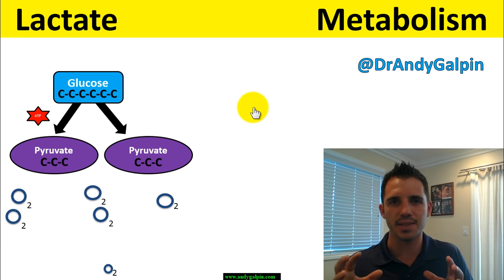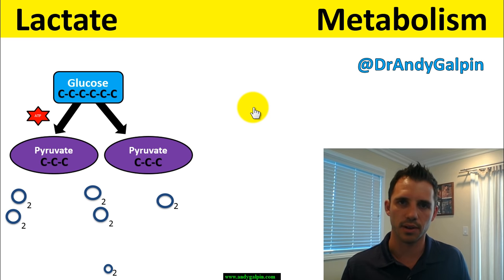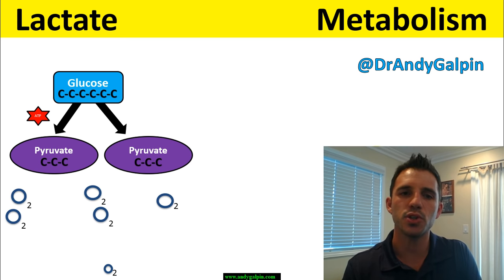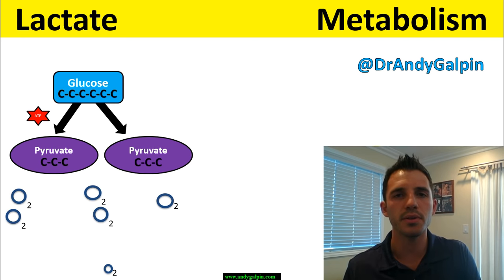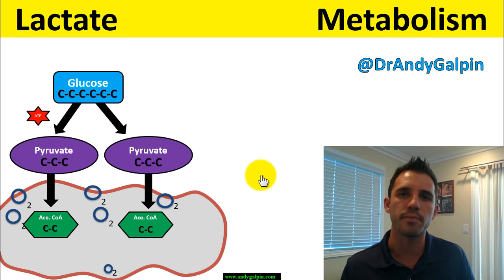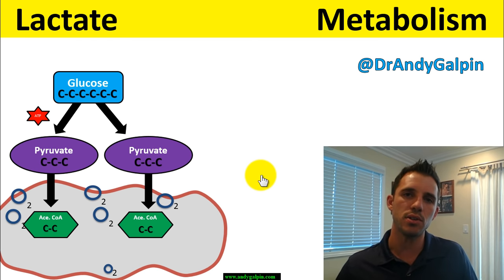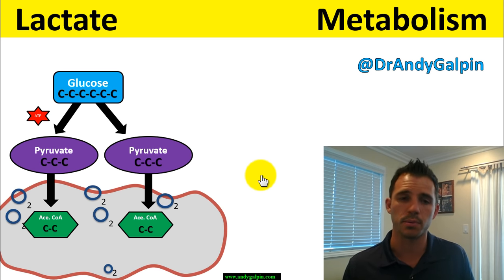What we do with pyruvate depends entirely on one thing: what do our O₂ levels look like? If we have sufficient O₂ available, we're going to take this pyruvate and ship it into the mitochondria. The mitochondria is a special organelle where we make most of the energy in our cells. Any multi-celled organism is going to be using mitochondria for oxidative metabolism. Aerobic metabolism can only happen in the mitochondria.